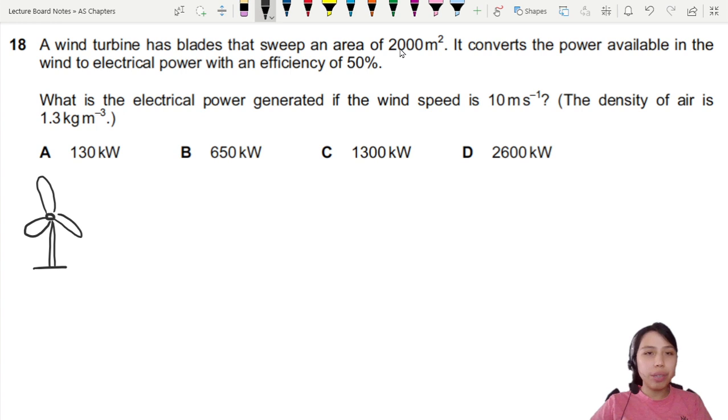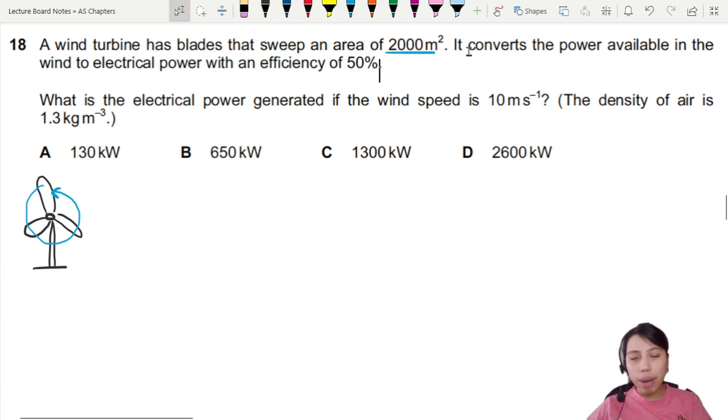So when the wind blows into the turbine, it makes the turbine rotate. And that's where you have an area that comes out. So this turbine will convert the power in the wind to electrical power with a certain efficiency.